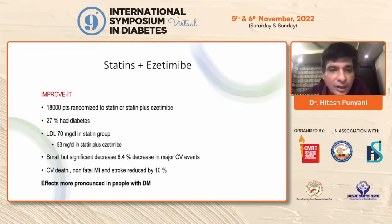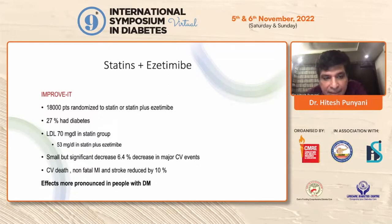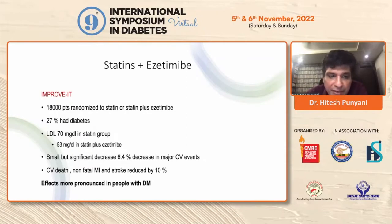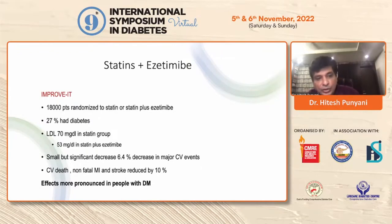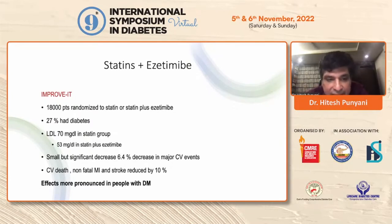Ezetimibe has made inroads over the last few years. The IMPROVE-IT trial, with almost 30% diabetic patients, had intensively treated patients on atorvastatin brought down to 70 mg/dL. By adding ezetimibe, LDL was brought down to 53 mg/dL, producing a significant decrease of about 6.4% in major CV events. So even when already at 70, bringing it to 53 gives a further 6.4% reduction in CV benefit. This effect in subgroup analysis was even more pronounced in patients with type 2 diabetes.